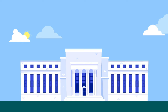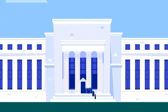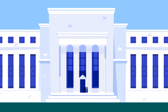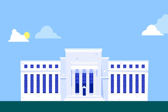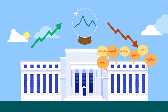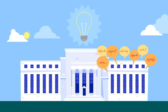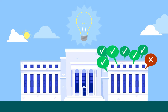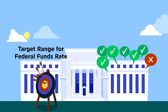How does the Fed try to achieve its dual mandate? The Fed sets monetary policy to start a chain of events in the economy. First, the FOMC meets — it has eight regularly scheduled meetings a year. At these meetings, the committee looks at data on current economic conditions, what is trending up and what is trending down, and how the economy is likely to change going forward. Based on that information, the FOMC makes a monetary policy decision: specifically, it decides what is the appropriate target range for the Federal Funds Rate, which is a short-term interest rate.